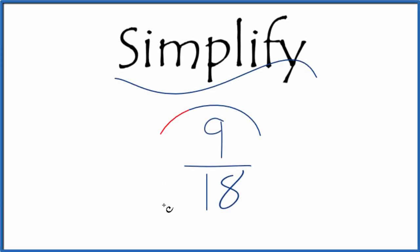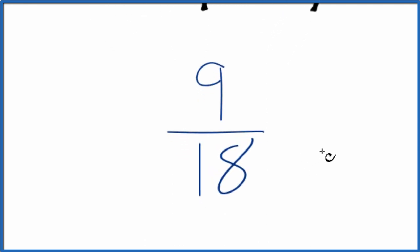Let's simplify the fraction 9 eighteenths, and here's how we'll do it. So we want to find another fraction that's equivalent to 9 over 18. It has the same value, it's just in lowest terms.